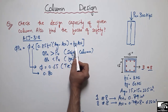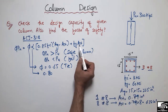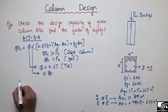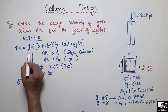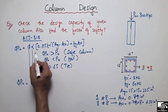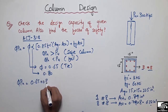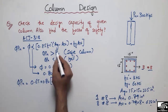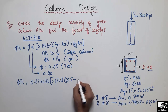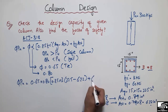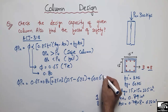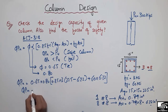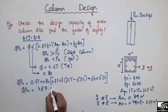Now we have all values: Ag = 225 in², Ast = 6.32 in², fy = 60 ksi, f'c = 3 ksi. Plugging into the formula: φPn = 0.65 × 0.80 × [0.85 × 3 × (225 − 6.32) + 60 × 6.32]. Solving this equation, φPn = 487.15 kips.